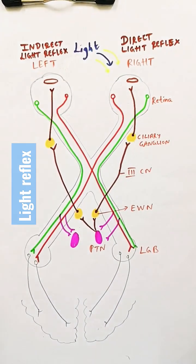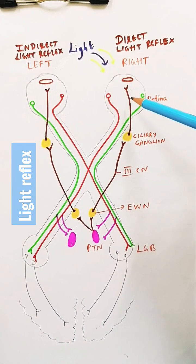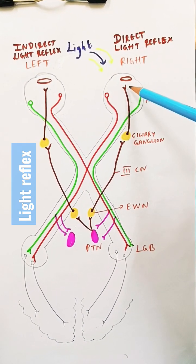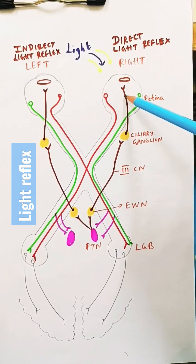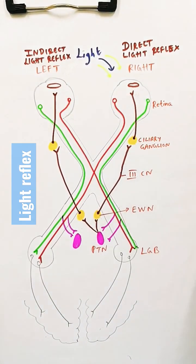Light shown into the same eye causes constriction of the same side pupil - this is called direct light reflex. Light shown into the same eye when the opposite pupil constricts is called indirect light reflex.